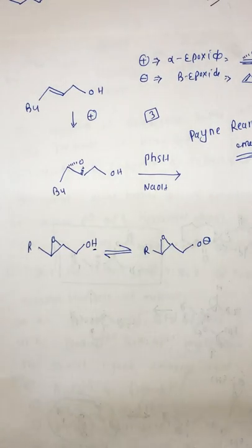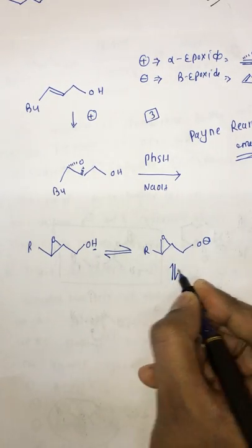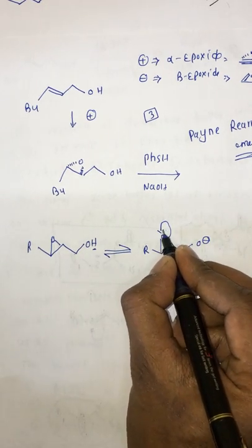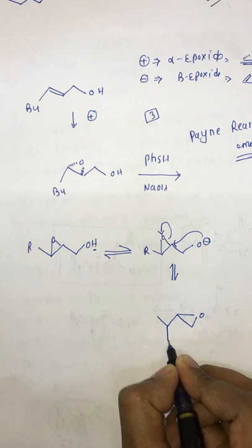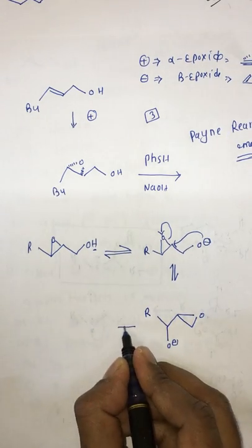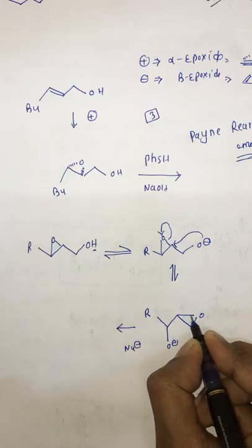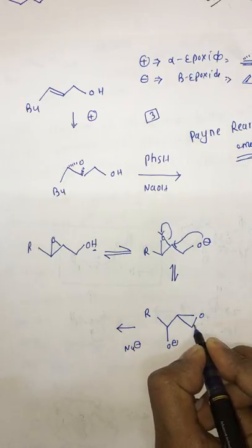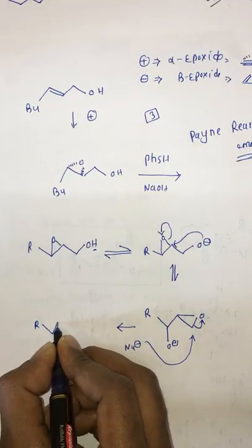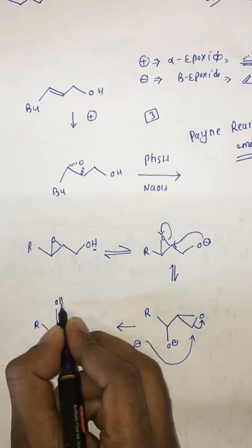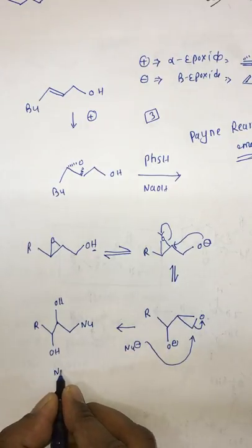The base abstracts the hydroxyl hydrogen because it is very acidic. Again, equilibrium occurs, this bond opens, and the negative charge attacks this carbon, giving O minus and R. The nucleophile then comes: this bond opens in this direction and the nucleophile attacks. We get OH, another OH, CH2, and the product is formed for nucleophile attack.